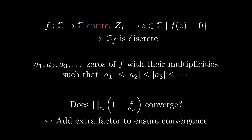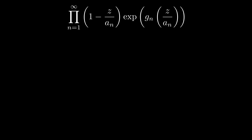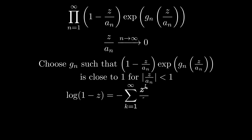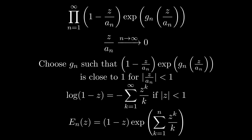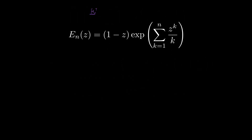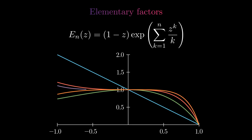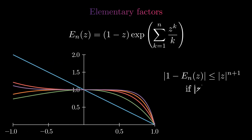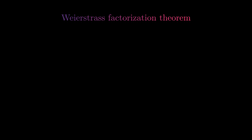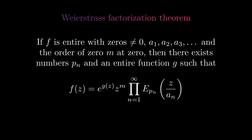Let's look at what factors we might want to add. As we don't want any additional zeros, we add exponential factors. Since the zeros are unbounded, for any z, the quotient converges to zero as n tends to infinity. In the products, the extra factors should ensure convergence by pushing the factors closer to one. When we look at the Taylor series of the logarithm, we could add the first few terms of the Taylor series to the logarithm, and by exponentiating this, we get these factors. We call them elementary factors. When we plot the first few elementary factors, we see that for small z, the elementary factor stays close to one. So when we have an infinite product of elementary factors, this ensures that eventually we will always multiply with terms very close to one, making the product converge. This can be expressed explicitly in an inequality. Now we are ready to state the Weierstrass factorization theorem: for an entire function, we can choose high enough orders for the elementary factors such that the product converges, and f is given by this formula.